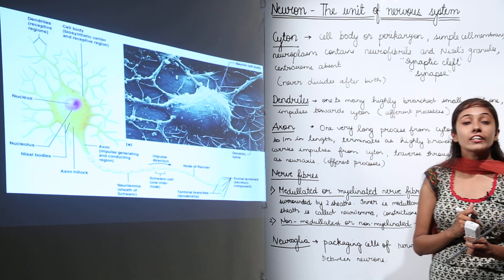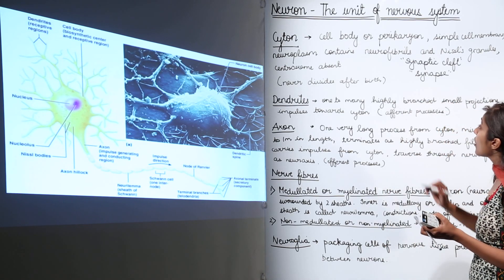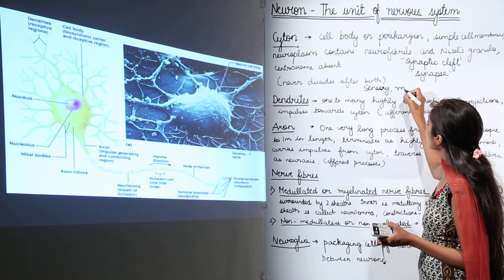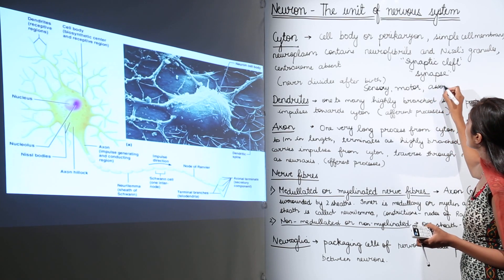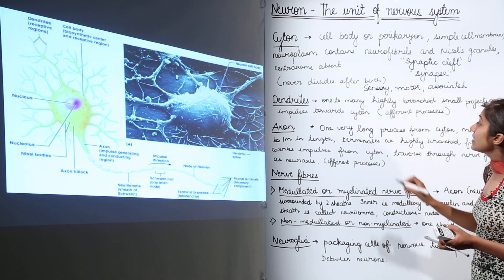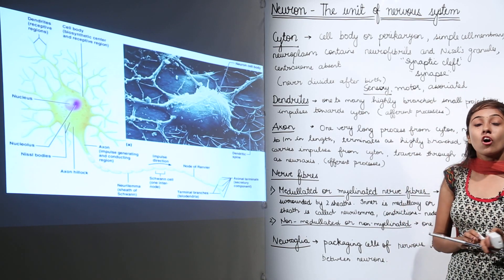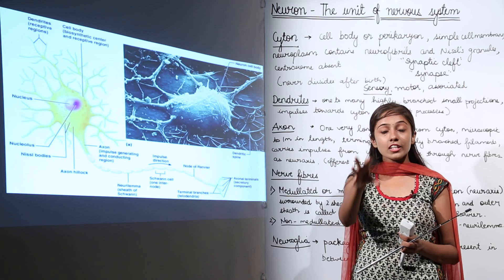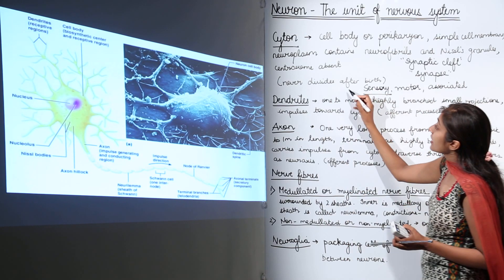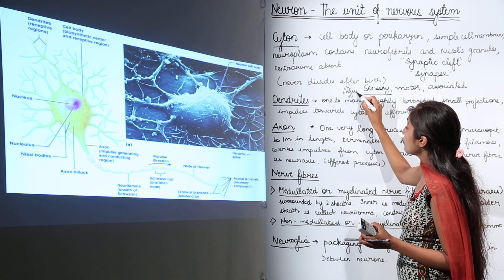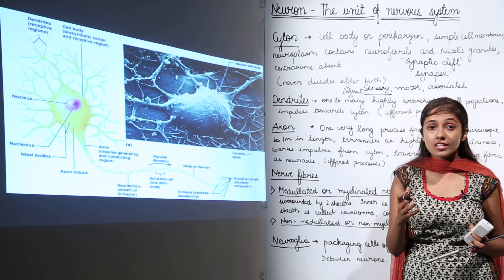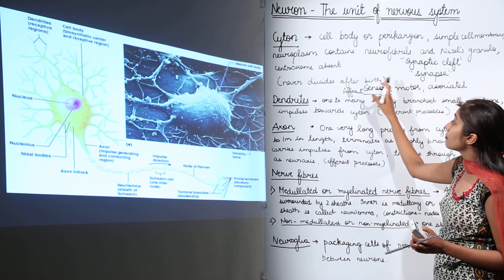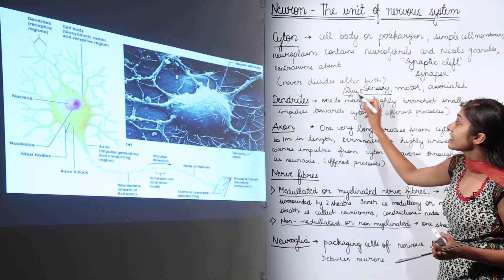There are three types of neurons. First, sensory neurons bring impulses from sensory organs to the brain — they are also called afferent neurons, because the stimulus is first perceived by the sense organs and sent to the brain in the form of an impulse.